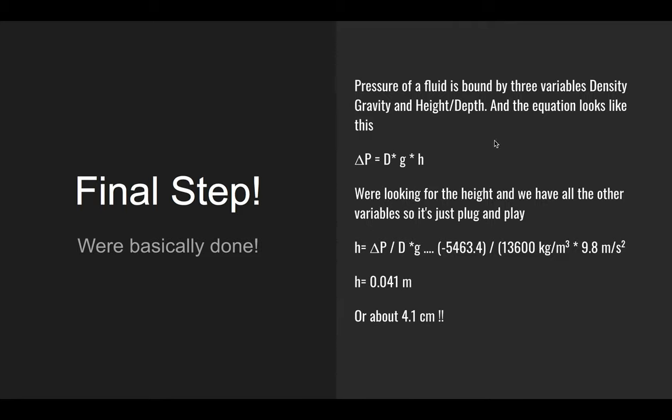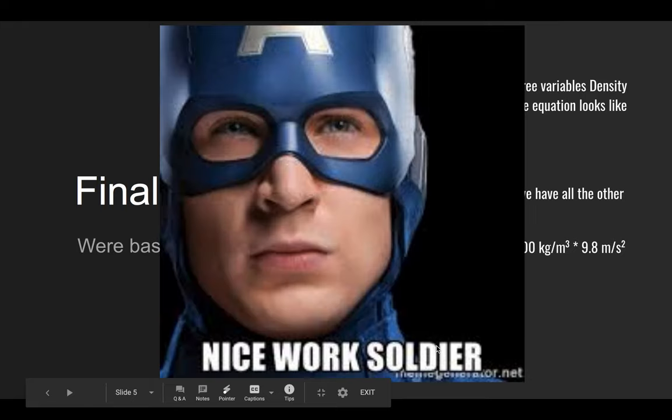So we have density of mercury, we have gravity, and we have the change in pressure. So we only need H. So we just isolate H and the equation ends up looking like this. You plug in your values and then you'll get 0.041 meters. And then you can leave it at that, or you can convert it to centimeters. And then that's it. Good stuff, guys.